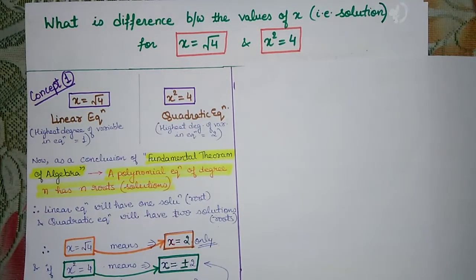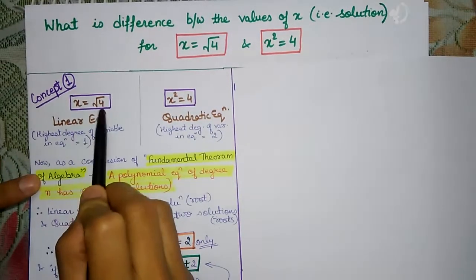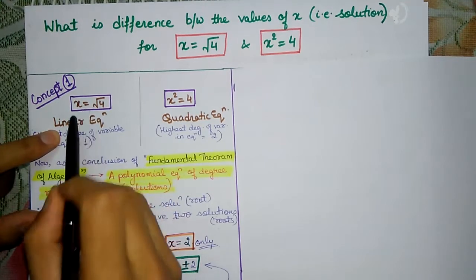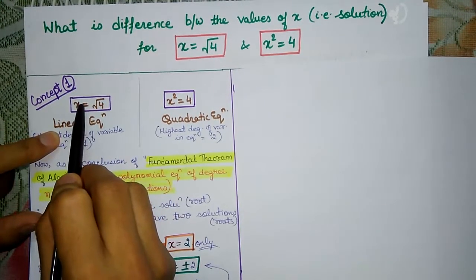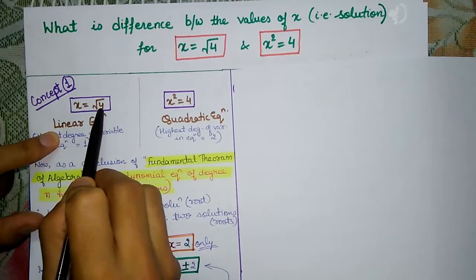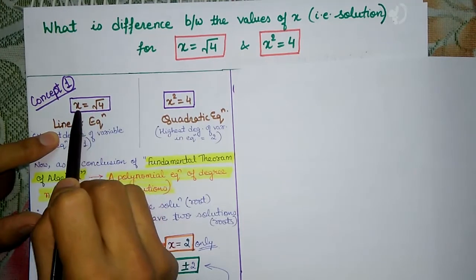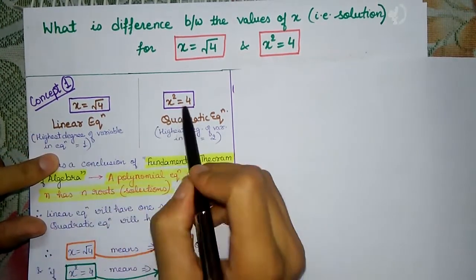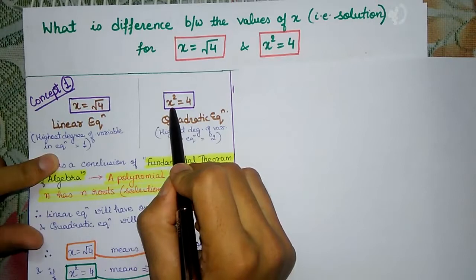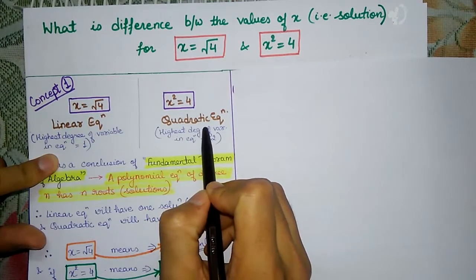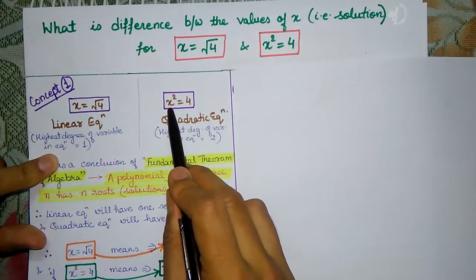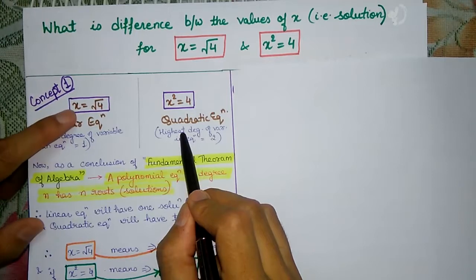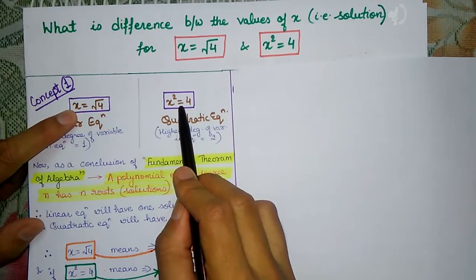This is the first concept regarding this question. x is equal to root 4 — we all know — is a linear equation. Why is it a linear equation? Because the highest degree of the variable x is 1 in this equation. And x squared is equal to 4 is a quadratic equation.